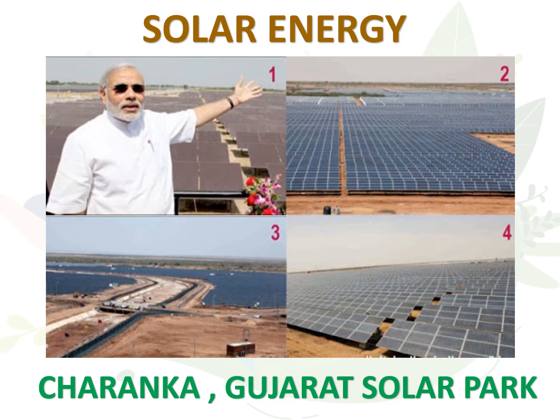This barren land with wild vegetation has a mega solar power plant of 600 MW. This has reduced the dependence on non-renewable fossil fuels in Gujarat. The people of Charanka have benefited as they have a good source of income and this will also help future generations in the next 40 to 50 years to come.